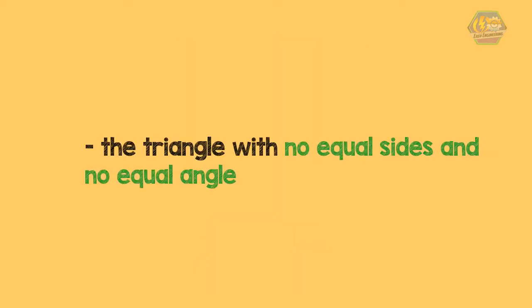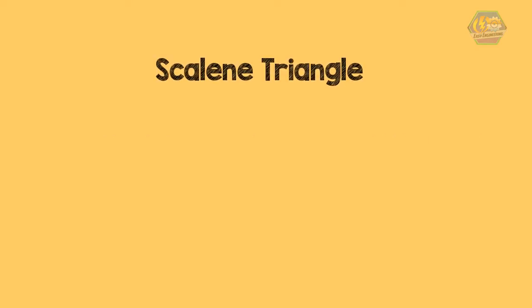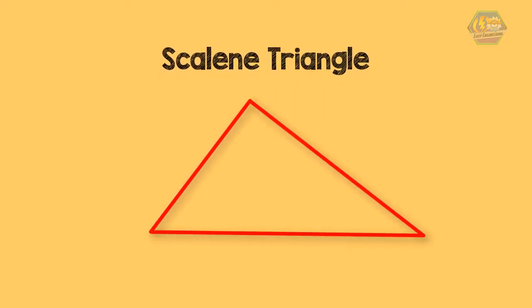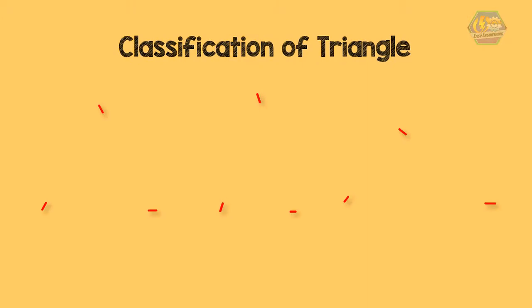And lastly, the triangle with no equal sides and no equal angles is also known as the scalene triangle. The length of all 3 sides of the triangle is different from one another. So these are the classifications of triangles based on sides.